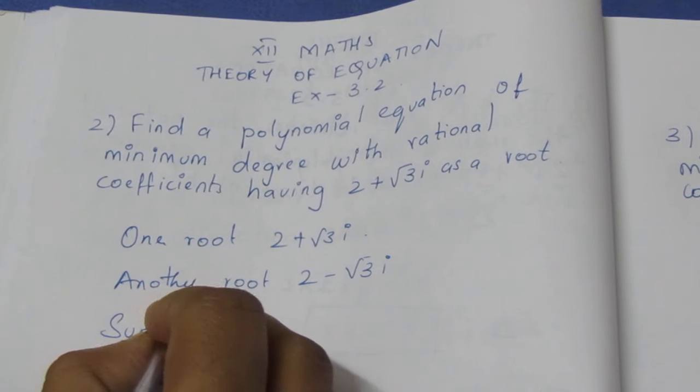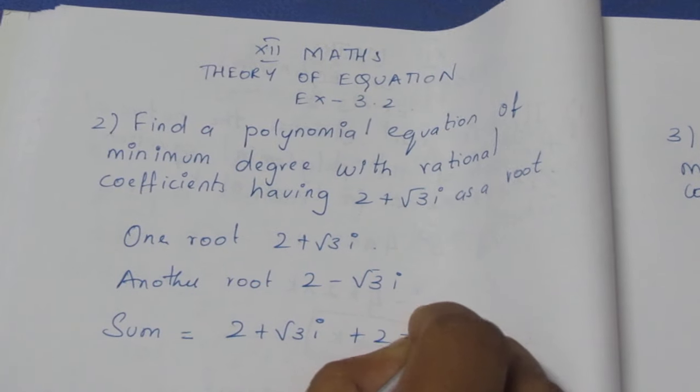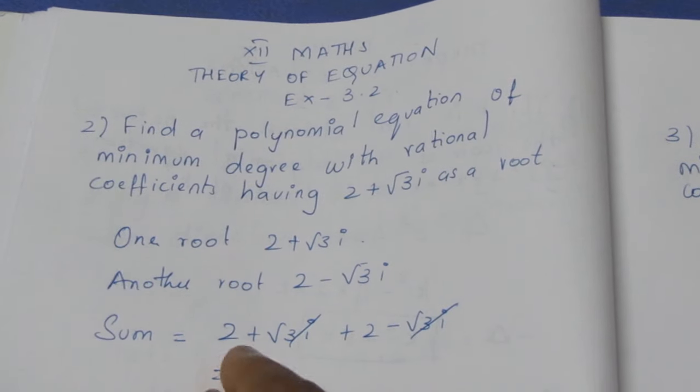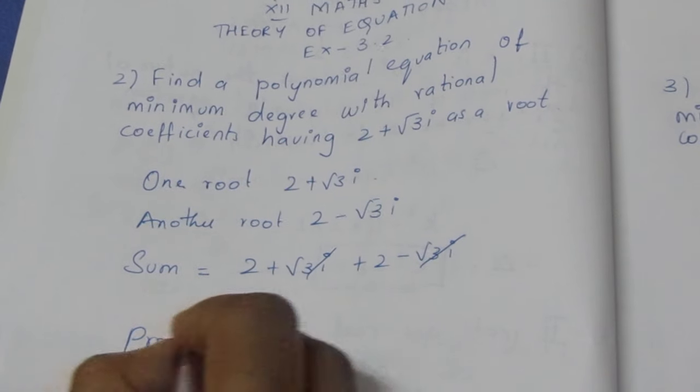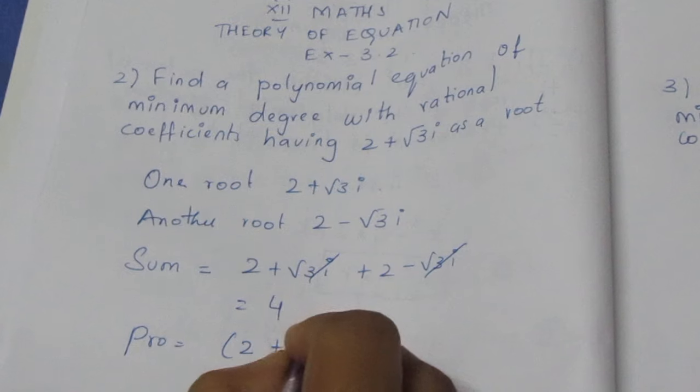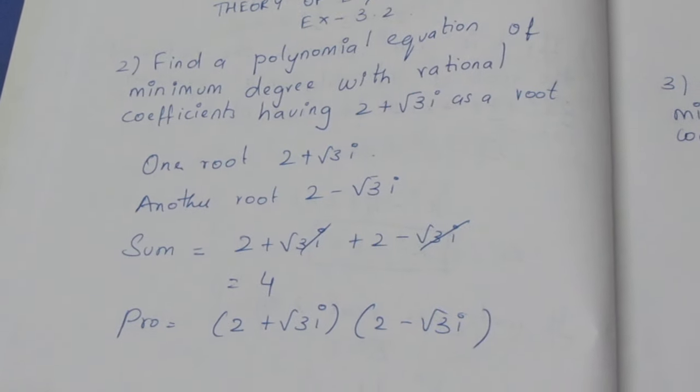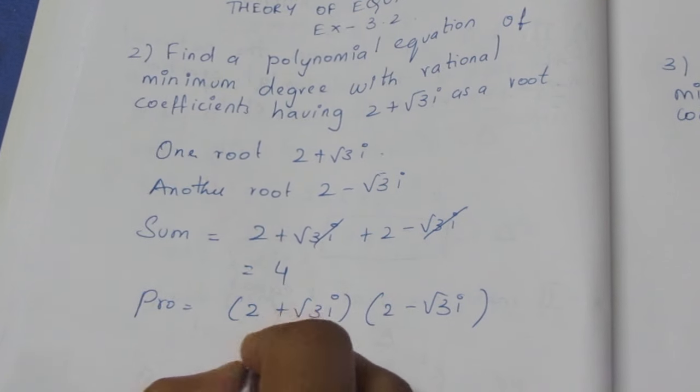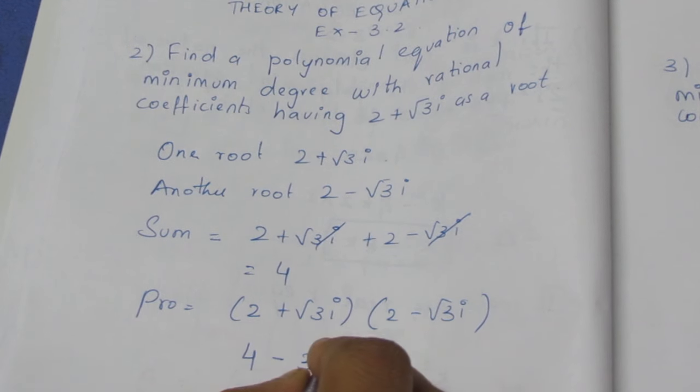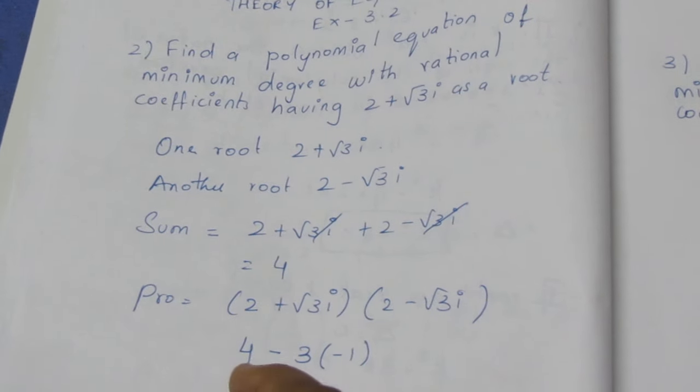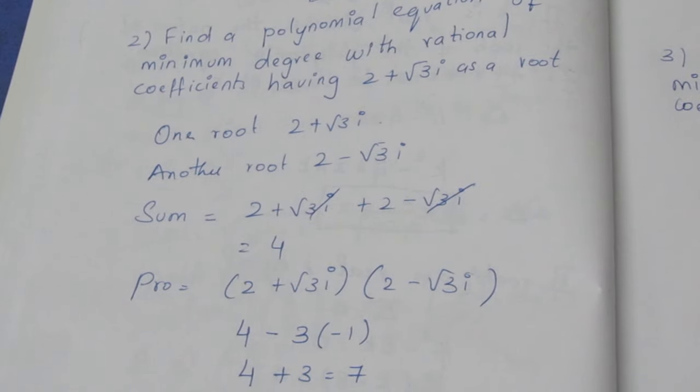Sum of the roots: 2 plus root 3i plus 2 minus root 3i equals 4. Product of the roots: (2 plus root 3i) times (2 minus root 3i) equals 4 plus 3 equals 7.